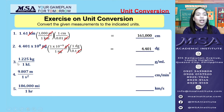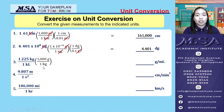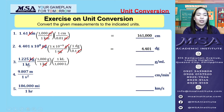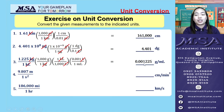For number 3, we have 1.225 kilograms per kiloliter, and we are asked to convert it into grams per milliliter. We convert kilograms into grams using 1 kilogram = 1,000 grams, leaving grams per kiloliter. Then we cancel kiloliters by converting to liters, and then liters into milliliters. The final answer is 0.001225 grams per milliliter.